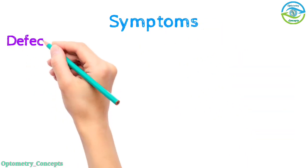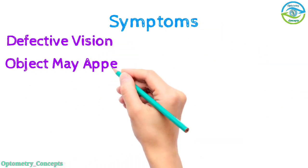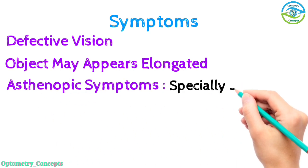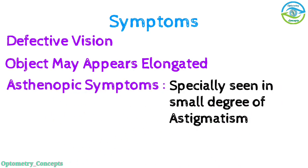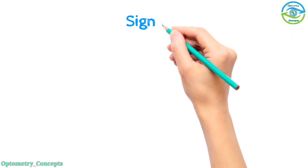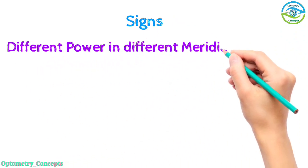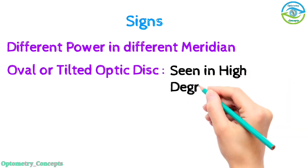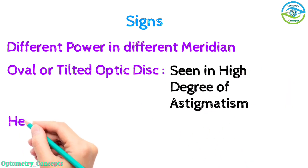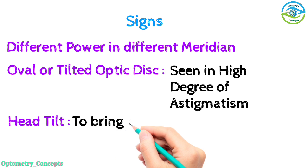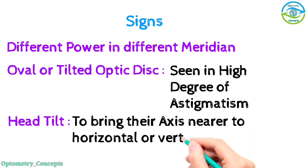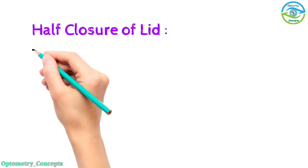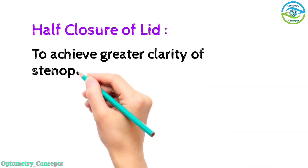Symptoms: defective vision, object may appear elongated, asthenopic symptoms especially seen in small degree of astigmatism. Signs: different power in different meridian, oval or tilted optic disc seen in high degree of astigmatism, head tilt to bring their axis nearer to horizontal or vertical meridian, half closer of lid to achieve greater clarity of stenopic vision.